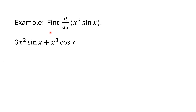As an example, we're going to find the derivative of x cubed times sine x. The derivative of x cubed is 3x squared. So that's the derivative of the first function times the second function, 3x squared times sine x, plus the first function x cubed times the derivative of sine x, which is cosine x. So we get f prime of x times g of x plus f of x times g prime of x.